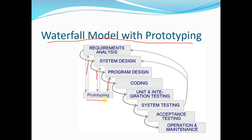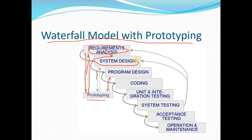In the waterfall model with prototyping, during the first phase of requirements we listen to the client, compile the requirement document, and develop a prototype based on that document. We show the prototype to the client, and when the client acknowledges and validates the demo, we move forward to system design. We again develop a demo, the client validates it, then we move to program design, where the same activity is performed.